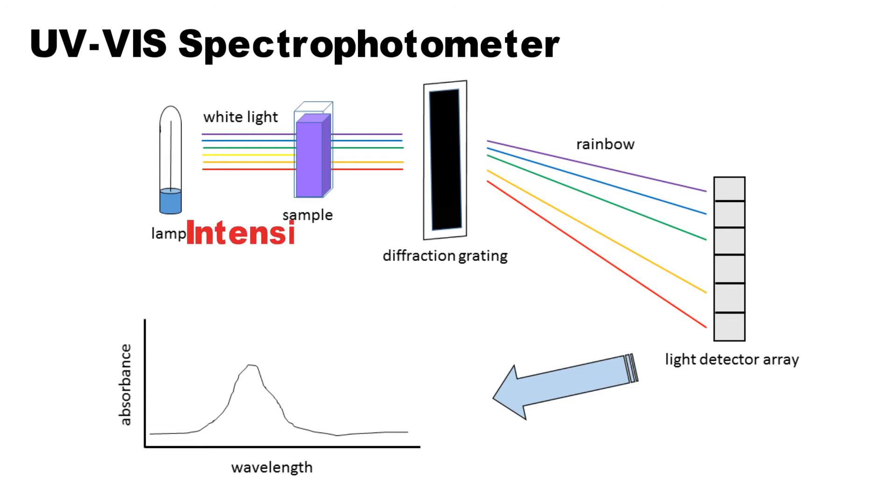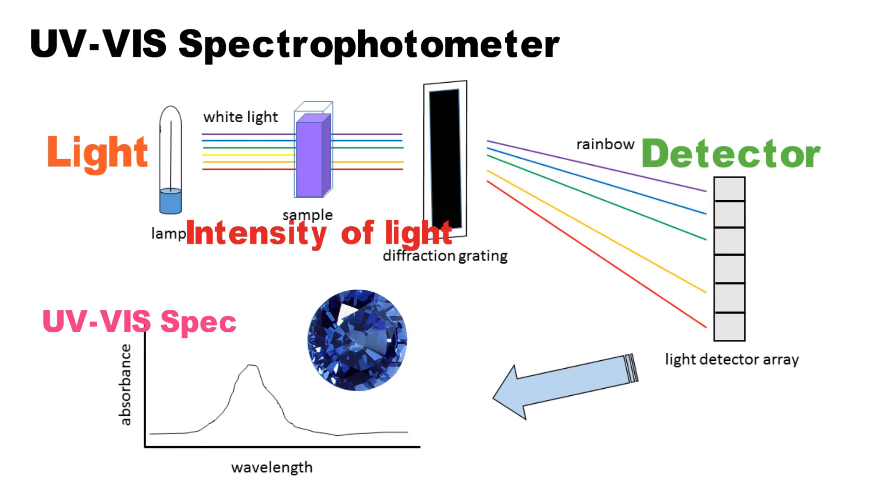UV visible spectrophotometer measures the intensity of light passing through a gemstone and compares it to the intensity of light passed without gemstone. The main components of this tool are a light source, a sample holder, a dispersive device, and detector.